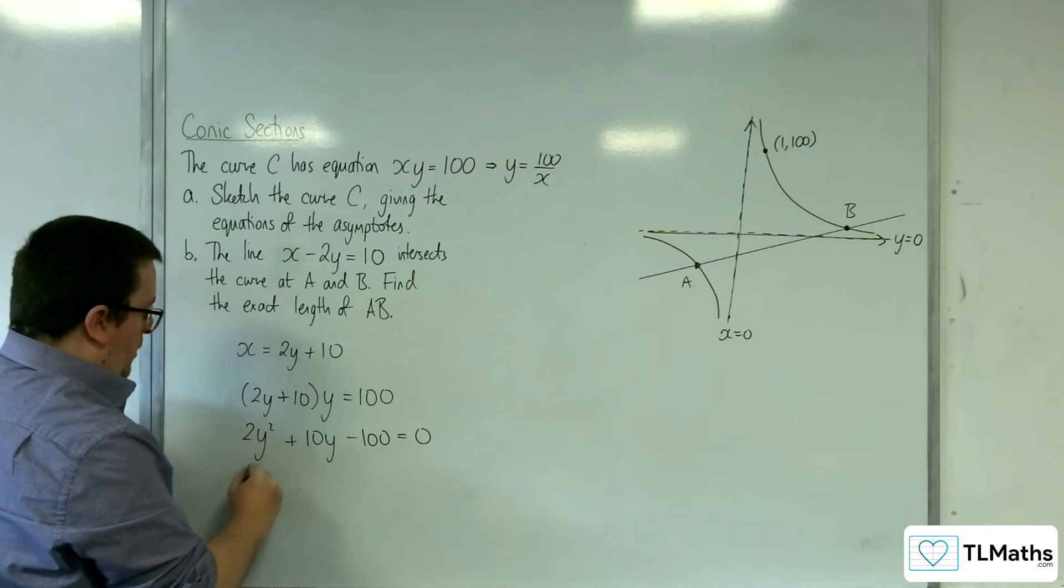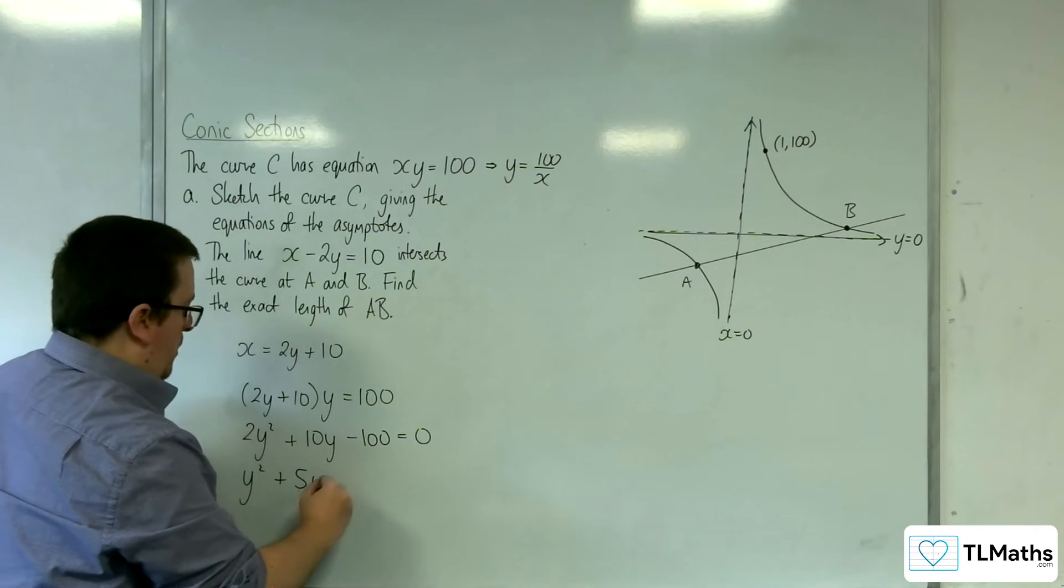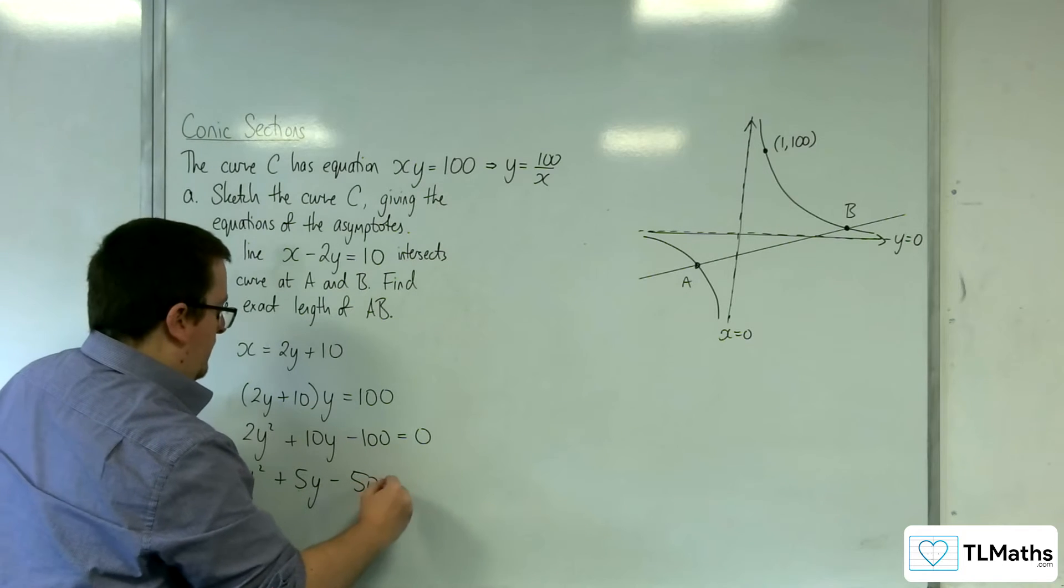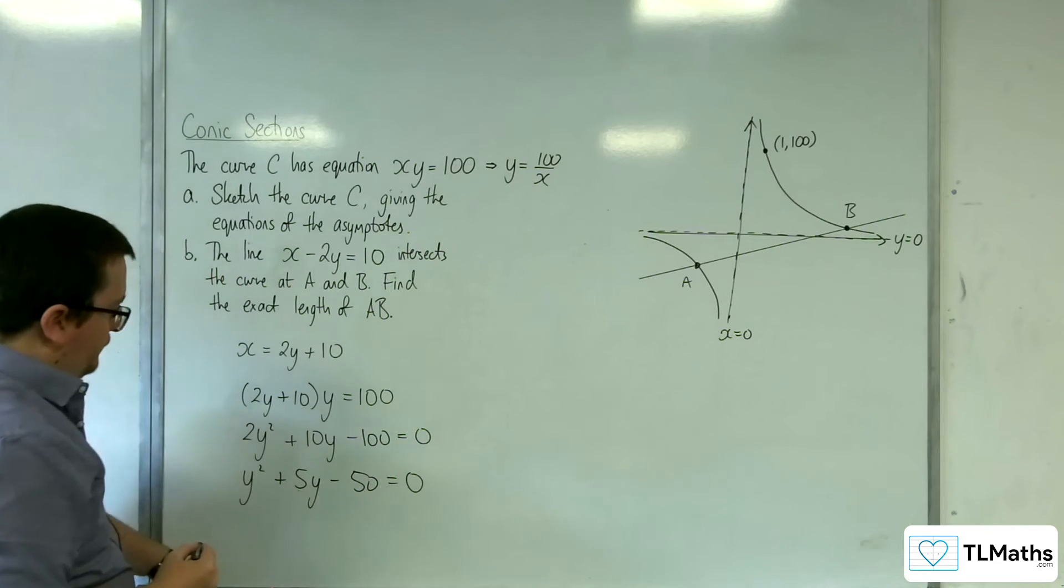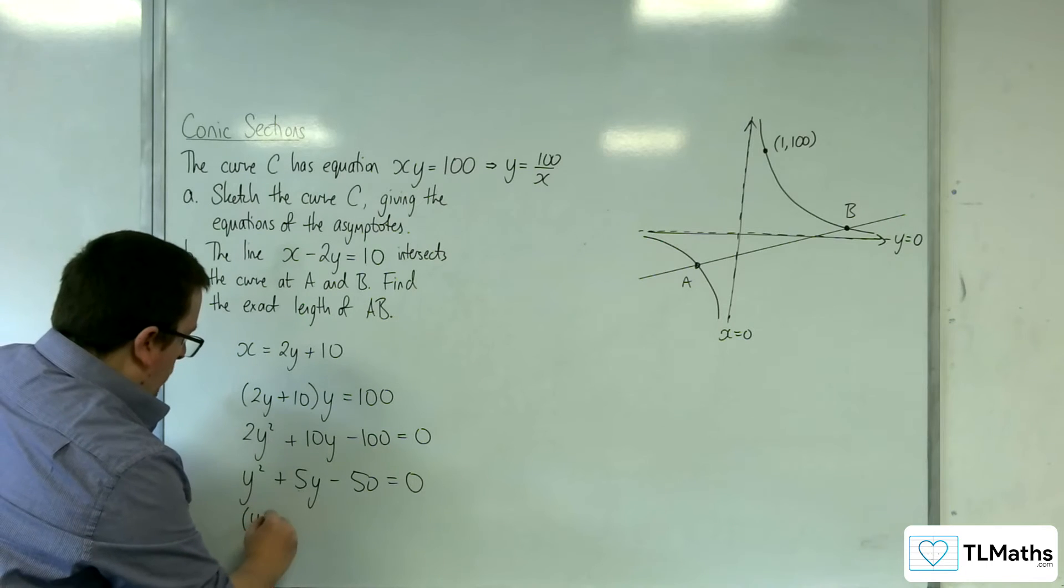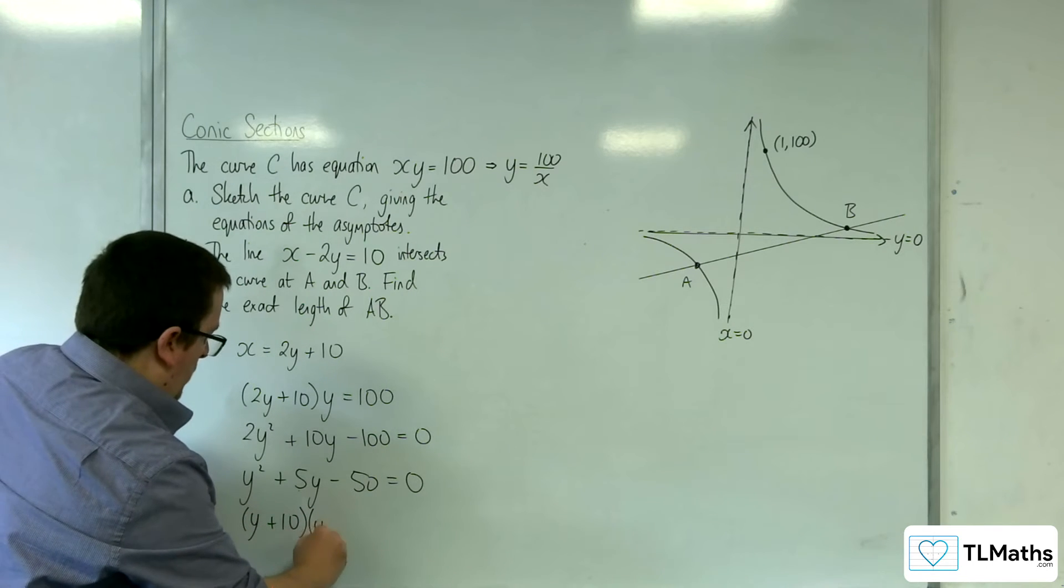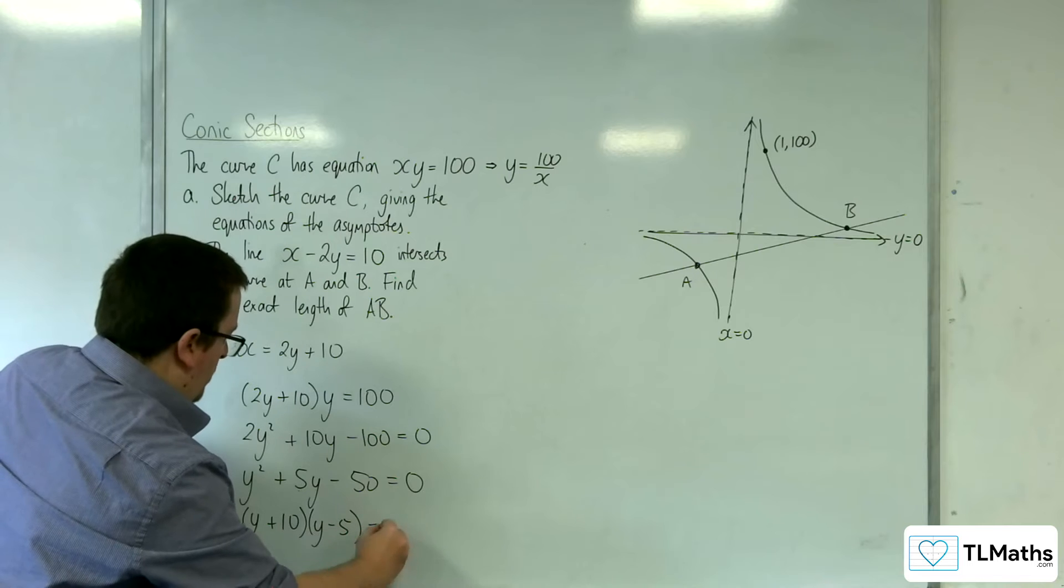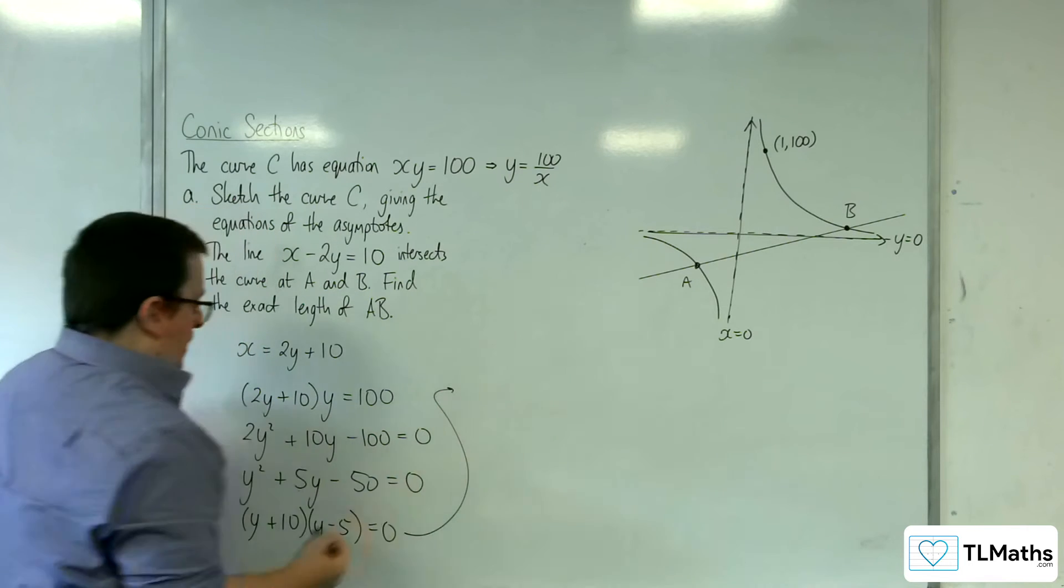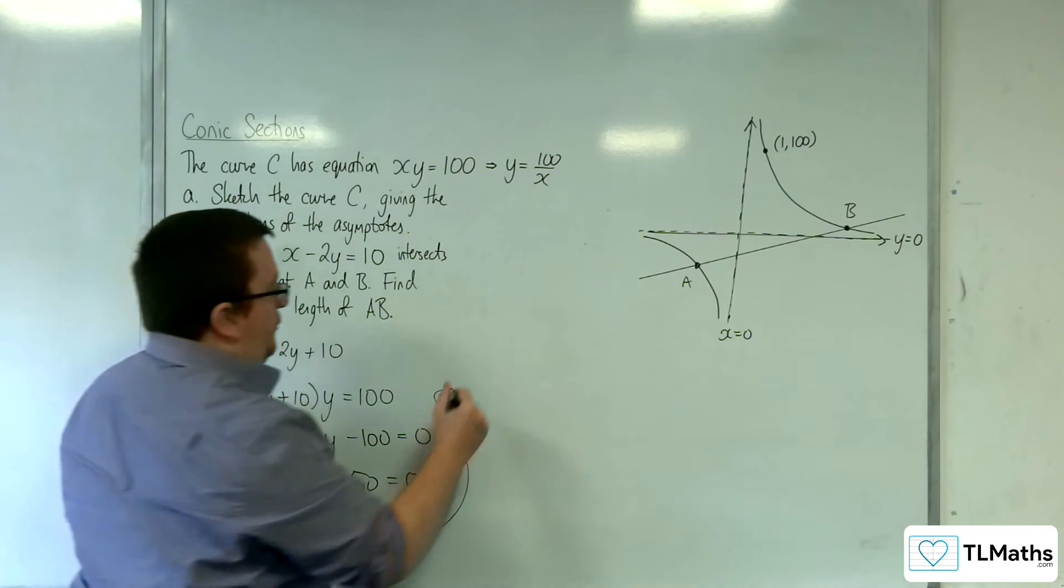Divide through by 2, we get y squared plus 5y minus 50 is equal to 0. Then we can factorize that to get y plus 10, y minus 5 equals 0. So either y equals minus 10 or y equals 5.